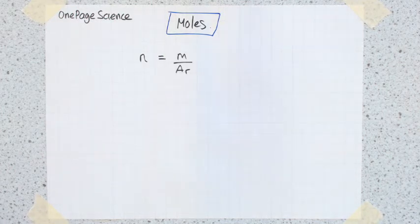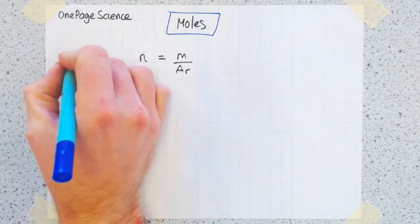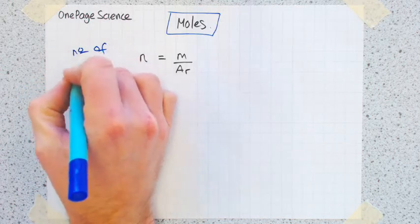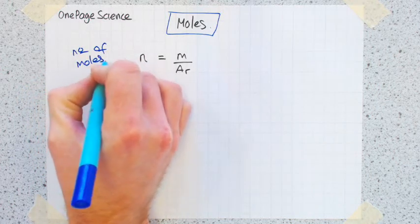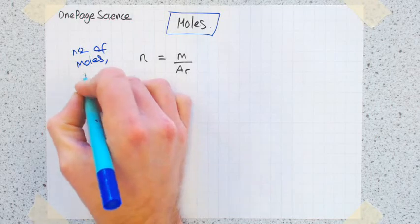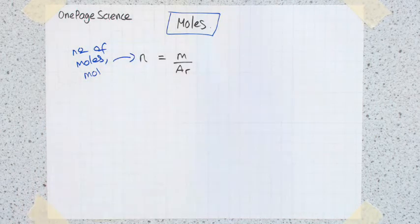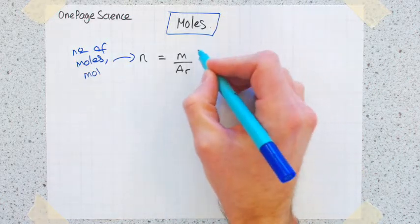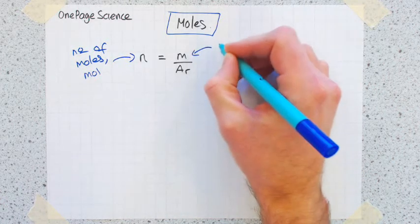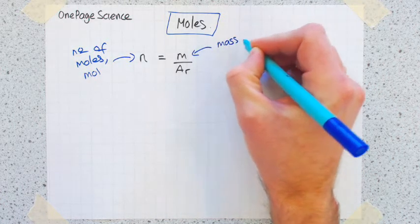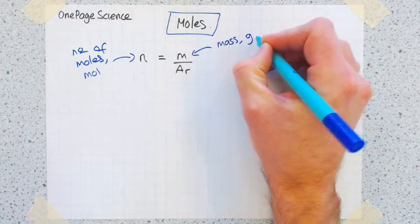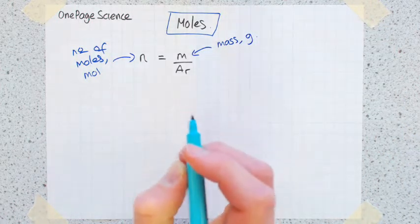I'm going to tell you what each three parts of that mean, but that is something worth memorizing. So n is the number of moles, and it has the unit shorthand of mol. That's what the n represents. The m is the mass in grams.